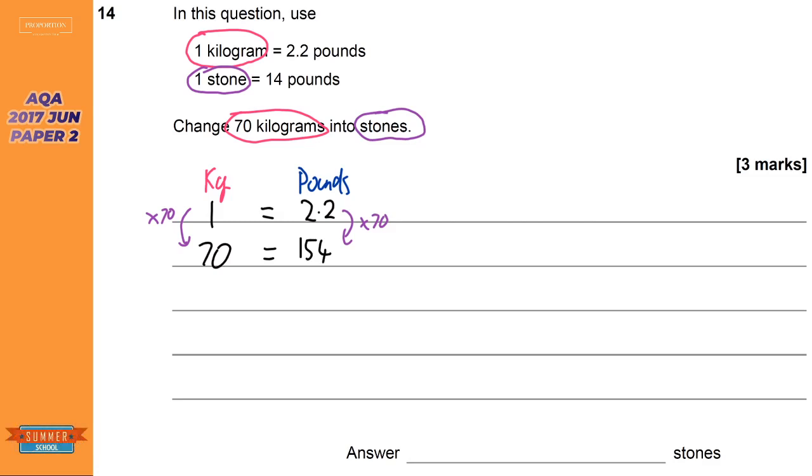Now we need to convert pounds into stone. So pounds, and we have stone. So we've got 154 pounds, and we're looking to see how many stones. So actually, we'll start off with the conversion, so it says 14 pounds is equal to one stone, and we know we've got 154 pounds.